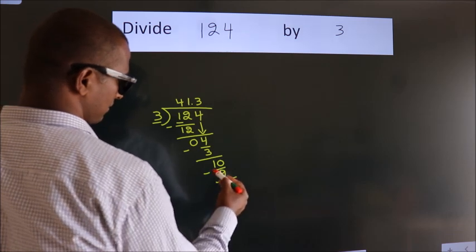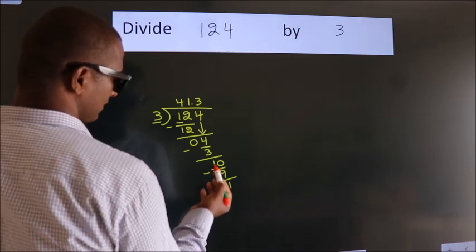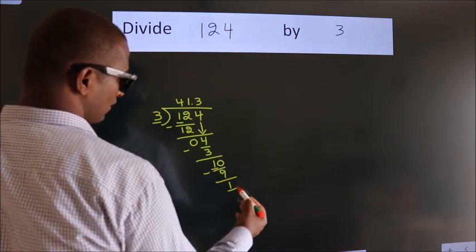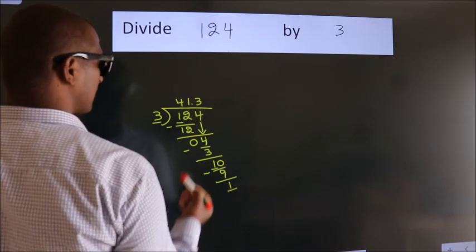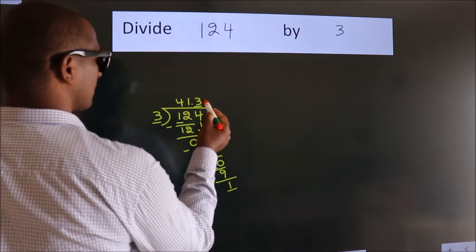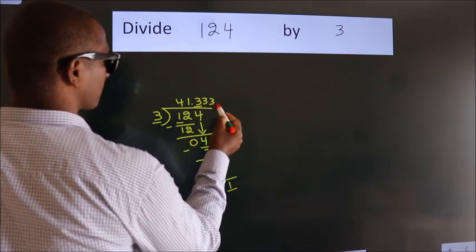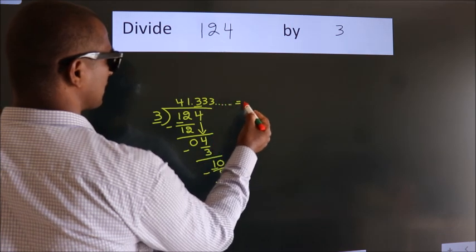Now you observe. We had 1 here, and we got 1 again. That means this number keeps on repeating. So this is our quotient.